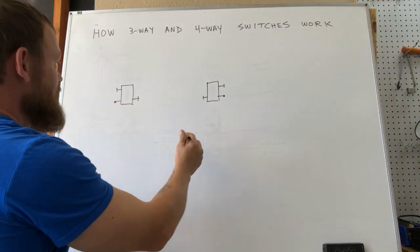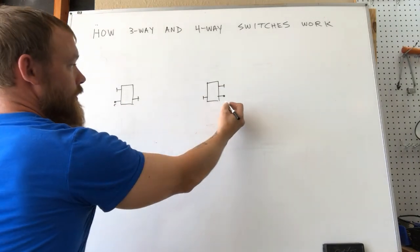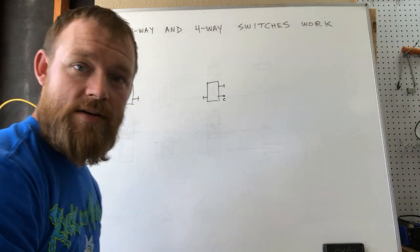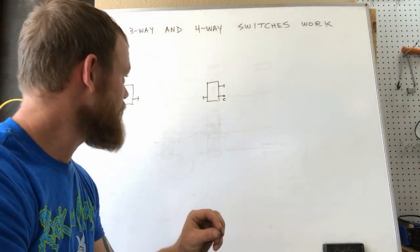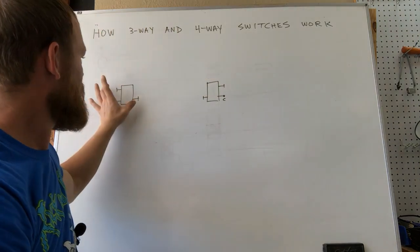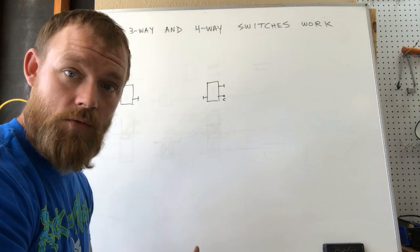So what I've drawn is two three-way switches. I'm going to write a C under this because in a three-way switch, as you've seen in some of the other videos, it has a common screw. It's a black screw. The other two screws are gold screws and those are for your travelers only.